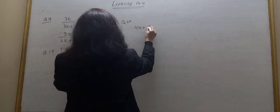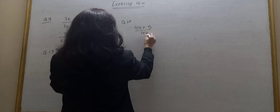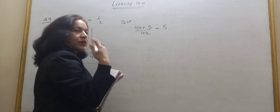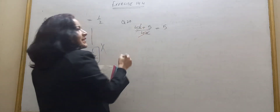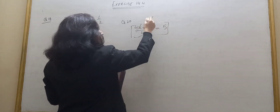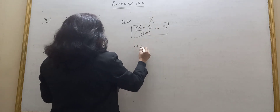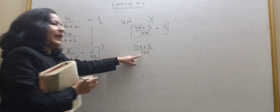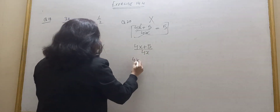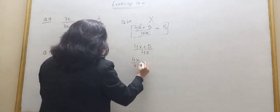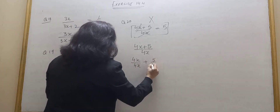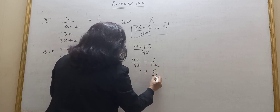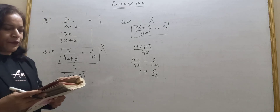Question number 20: 4x plus 5 upon 4x is not equal to 5. Similar thing — you can't cancel. In this case, since the denominator is a single term 4x, you can divide: 4x divided by 4x plus 5 divided by 4x, giving 1 plus 5 upon 4x. But it is not equal to just 5.